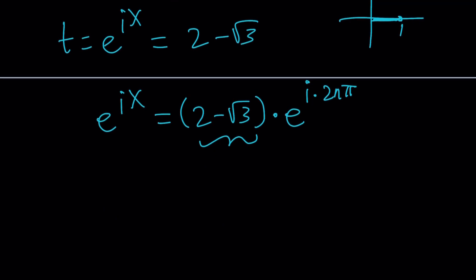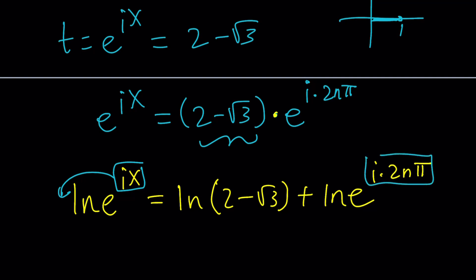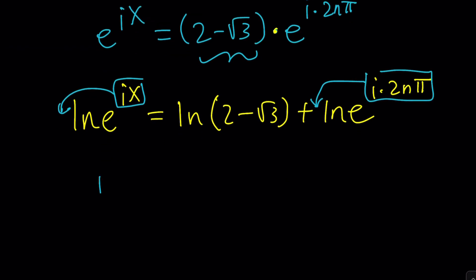Let's go ahead and natural log both sides. That's going to give us natural log of this. And I have a product, so if you natural log a product, it should turn into the sum of two natural logs. If you ln something with e to the power of something, it's just going to be that power because ln e is 1. You're going to end up with ix equals ln 2 minus root 3 plus i times 2n pi.